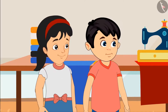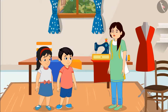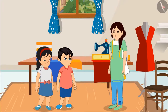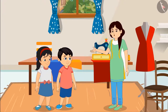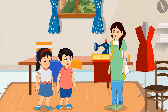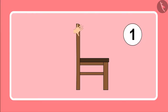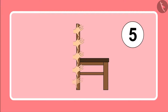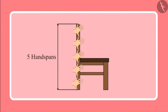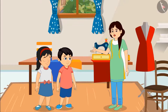Ok aunty. Children, both of you can take measurements of some items kept here. Yes aunty, I will measure the length of this chair. One, two, three, four, five. Five hand spans long. Very good Chotu.